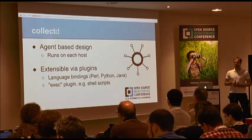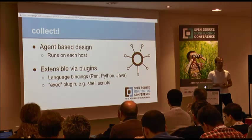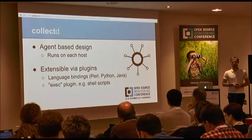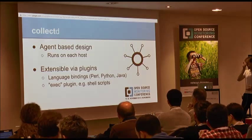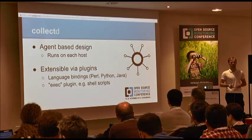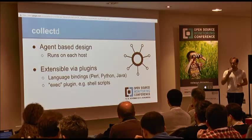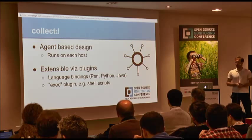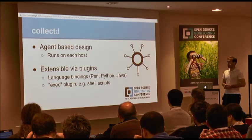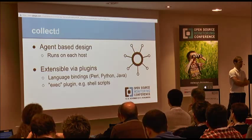We have language bindings for Perl, Python, and Java. The daemon itself is written in C. The vast majority of the plugins that it ships with is written in C. For people not happy about writing C code, we have embedded interpreters like mod_perl or mod_python in Apache — no forking of scripts. Likewise with Java and JNI. You can also fork scripts via the exec plugin, which works similar to how Nagios checks are performed.